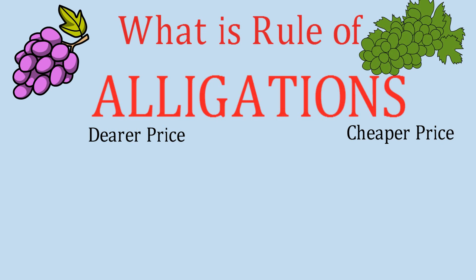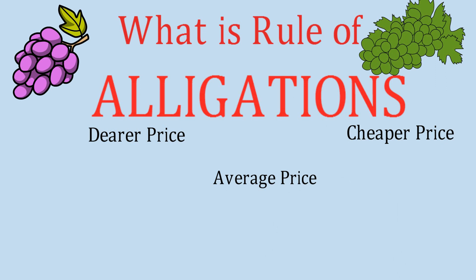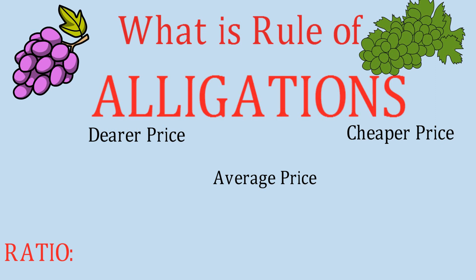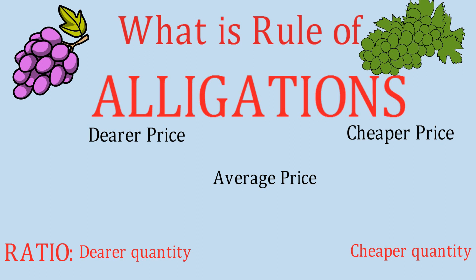Now suppose these two types of grapes are mixed in some ratio, and the resultant average price as per that ratio comes out to be something. So we have the dearer price, the cheaper price, and the average price — but we don't know the ratio in which they are mixed, i.e., their quantities. The rule of alligation lets us calculate the dearer quantity to cheaper quantity ratio.